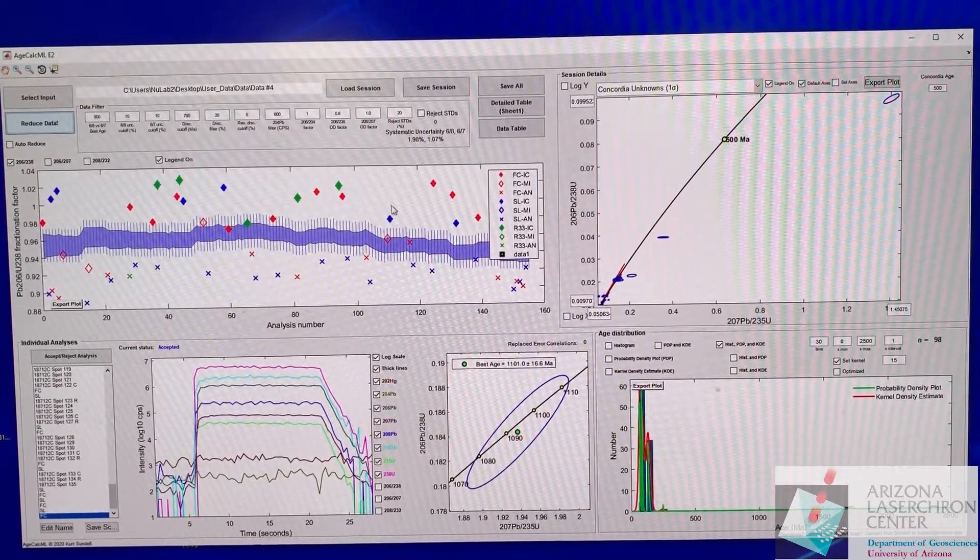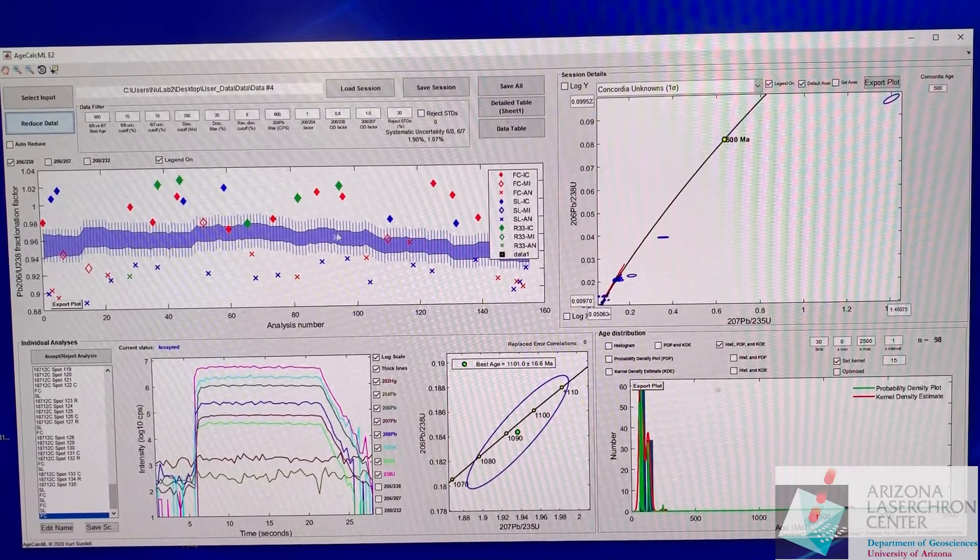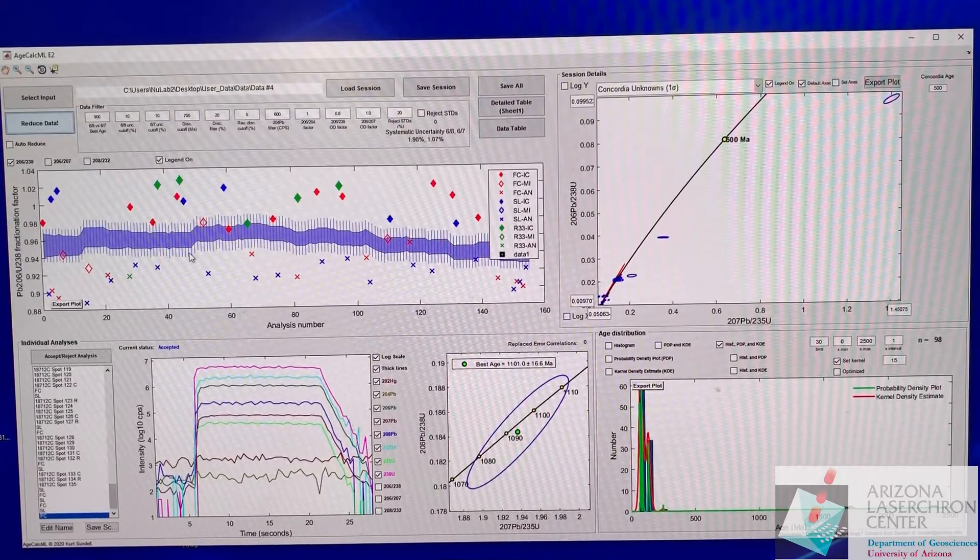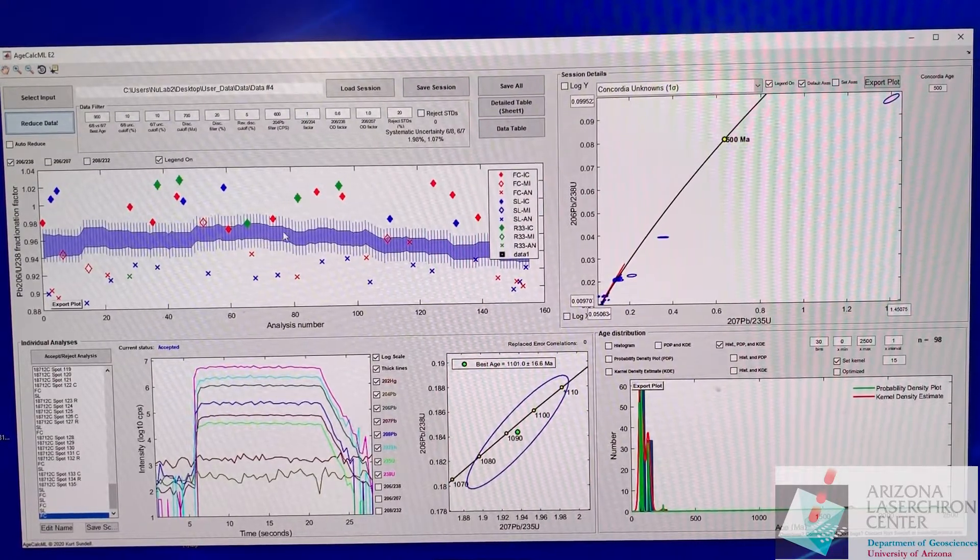If you look at this fractionation correction, we have three different standards that we use. I'm not going to go into much detail here. The main point I want to make is that we're trying to get this purple swath as small as possible. These vertical bars are 2% uncertainty.